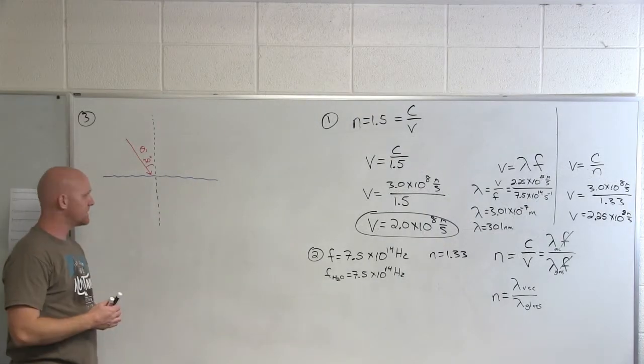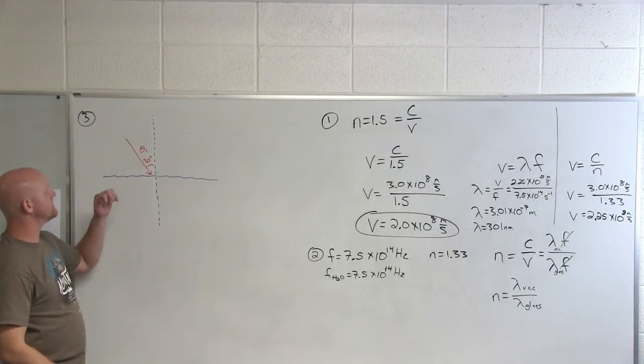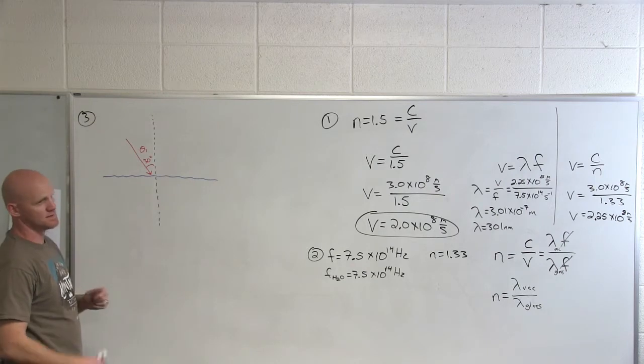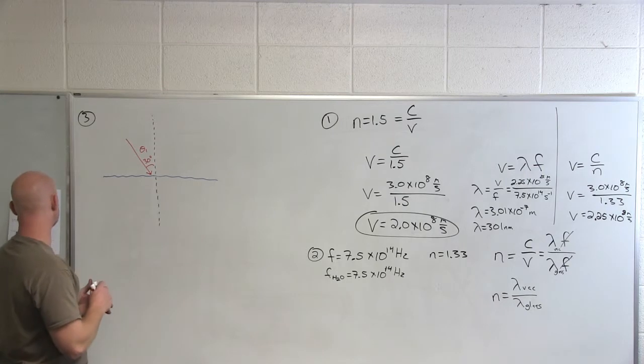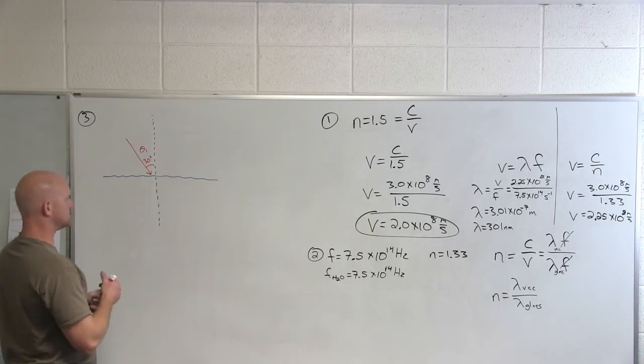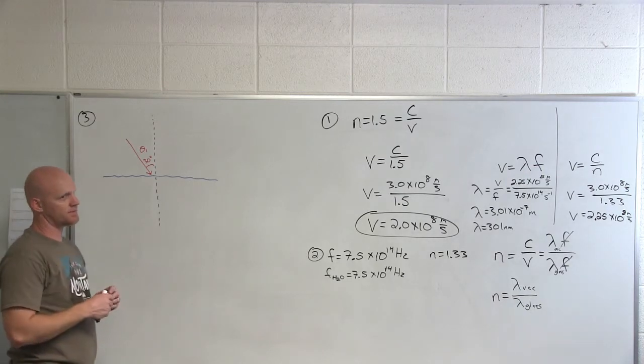All right. We're told if the angle of incidence of a flashlight's beam is 30 degrees into a lake, then what does the question say in number three? What is the angle of reflection?